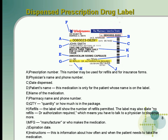Now looking at dispensed prescription drug labels, working our way around: A — the prescription number, which may be used for refills and for insurance forms. B — the physician's name, which is also where you would normally find the physician's phone number. C — the date dispensed. D — the patient's name. E — the name of the medication. F — the pharmacy name and phone number. G — the quantity dispensed. H — whether there are any refills available; the label will show the number of refills permitted. The label may also state 'no refills' or 'doctor authorization required.'